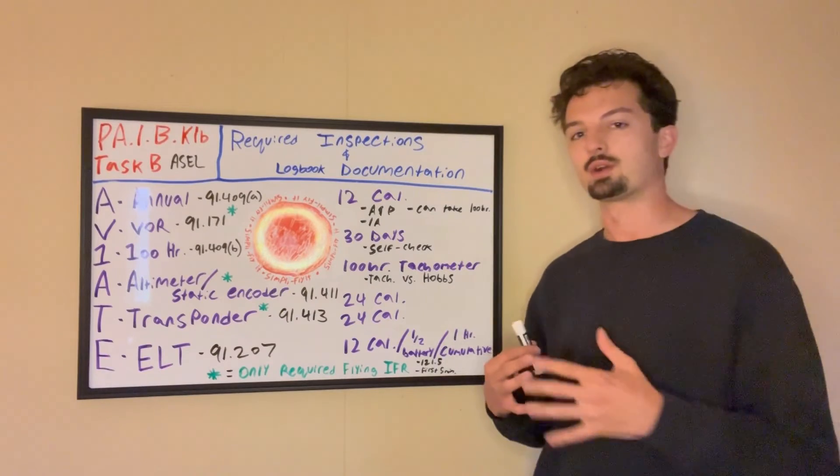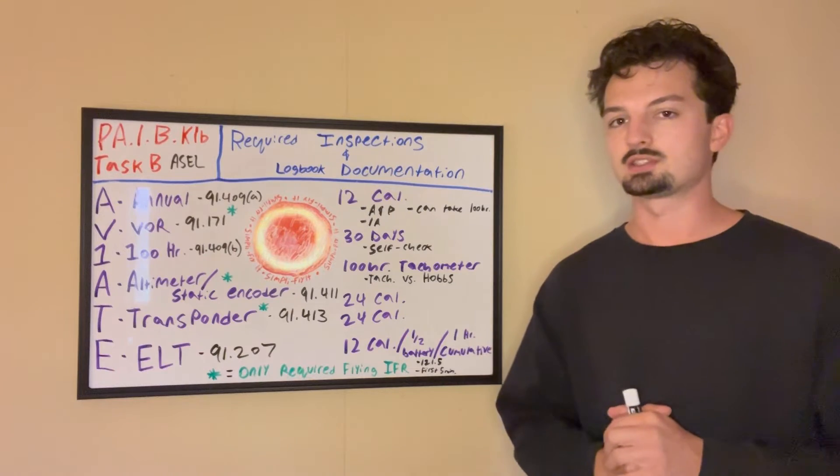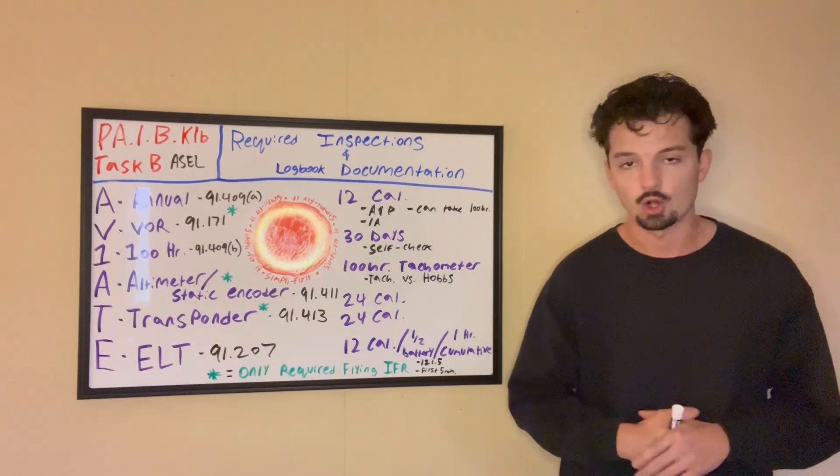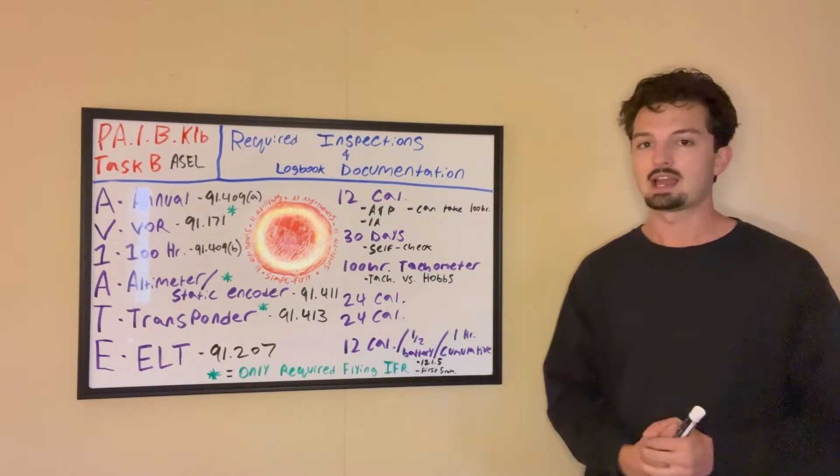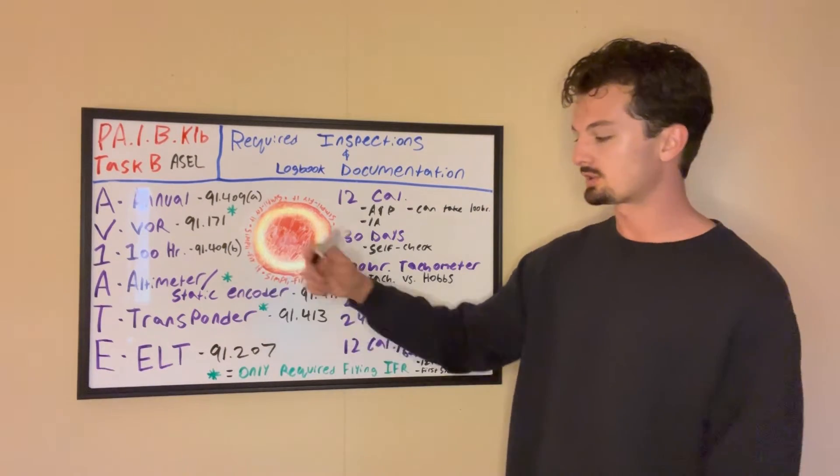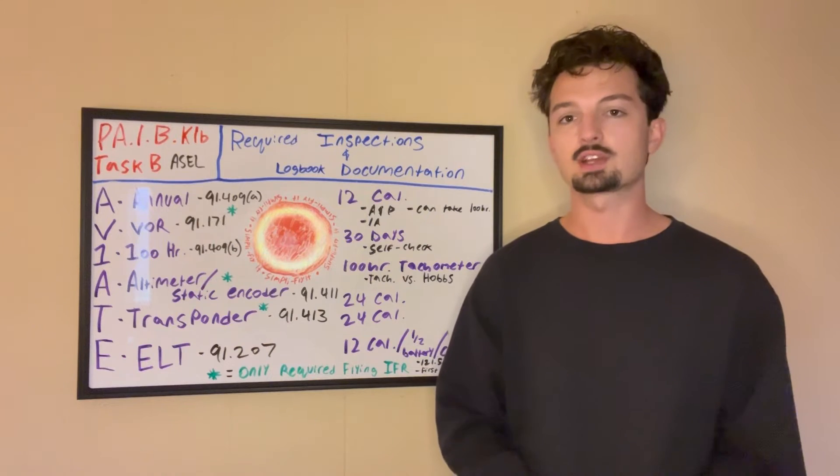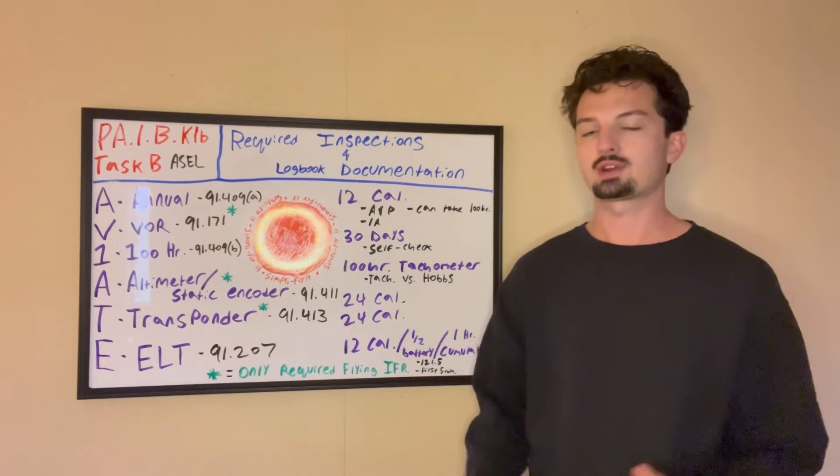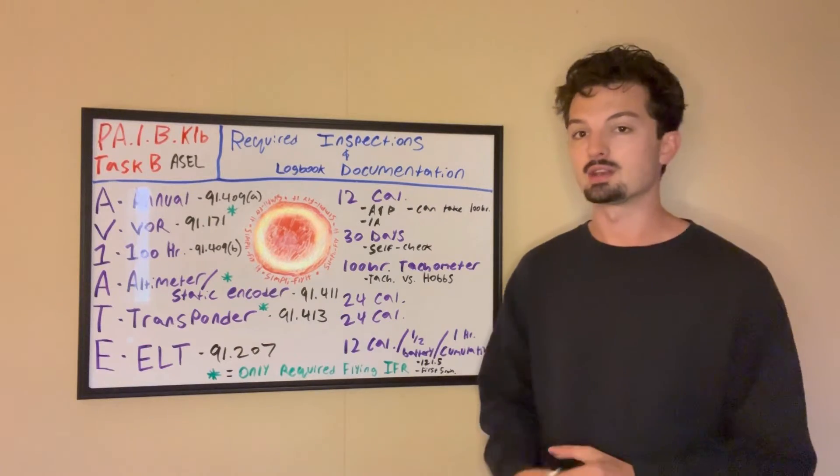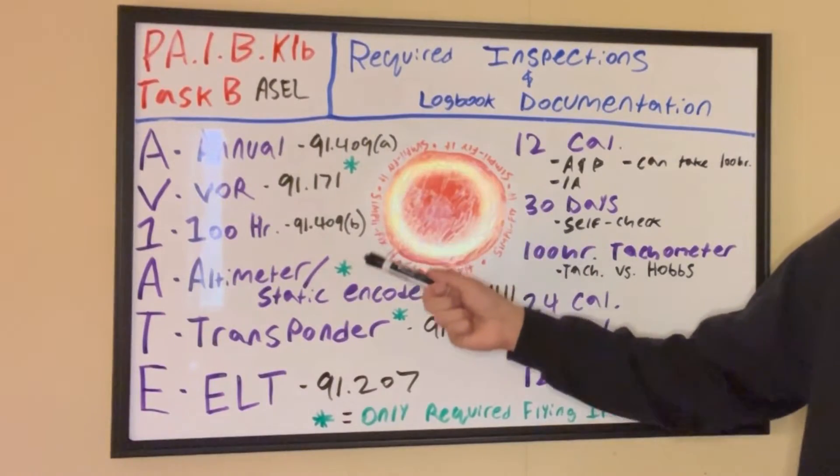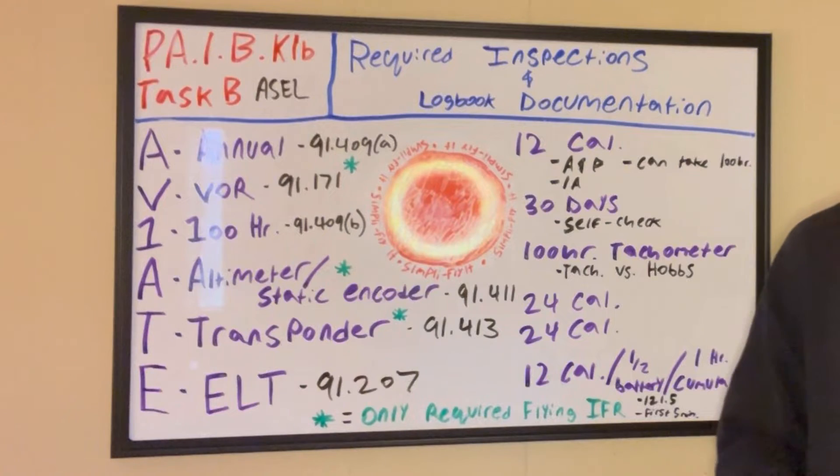Our next letter is the next A, which is our altimeter slash static encoder inspection, which only has to be done every 24 calendar months. And if you'll notice, we've got the green star, meaning you only need this one if you're going to be flying instrument as well. 91-411 is the regulation for that one. Along each side of our acronym here, I've got the FARs where you can reference these if you want to take a look.